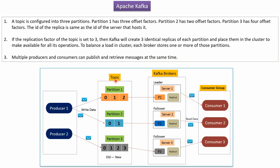Here you can see the topic which is configured into 3 partitions: partition 1, partition 2, and partition 3. Partition 1 has 3 offset entries. Partition 2 has 2 offset entries. Partition 3 has 4 offset entries.